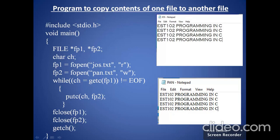Next, we will see a program to copy the content of one file to another file. What happens inside this program is: we already created a file named 'jos', and inside that file we have the data EST102 Programming in C, written 4 times. The data in the jos file will be read and copied into another file named 'pan'. So the data from the jos file is read and written to the pan file.